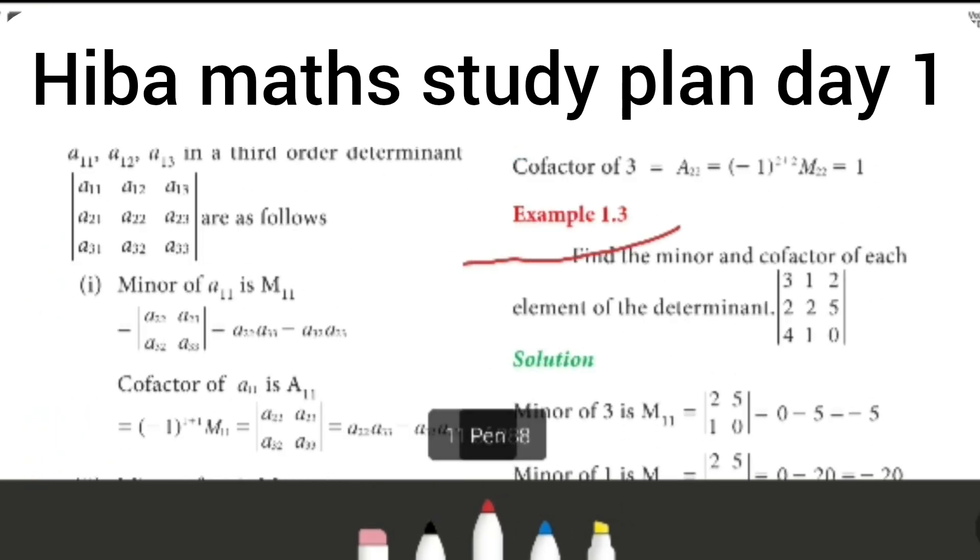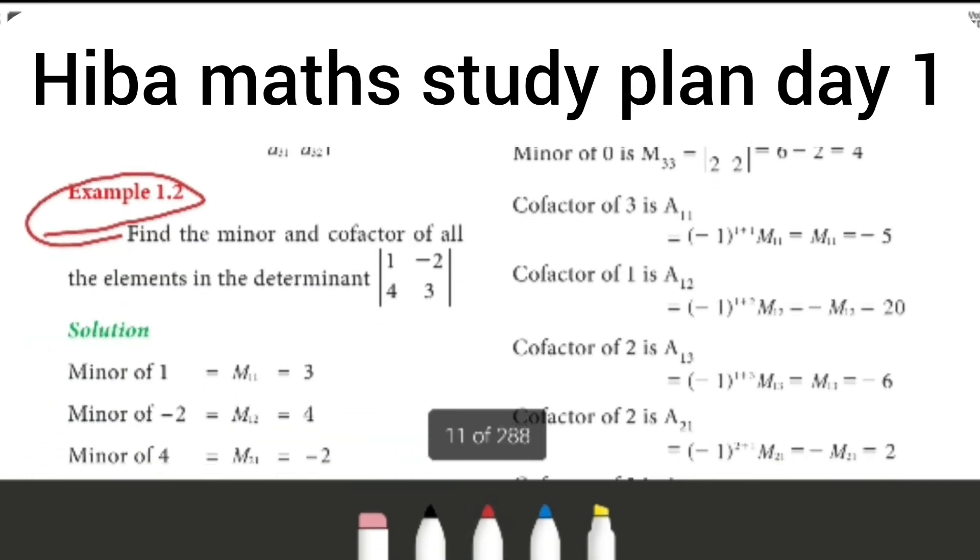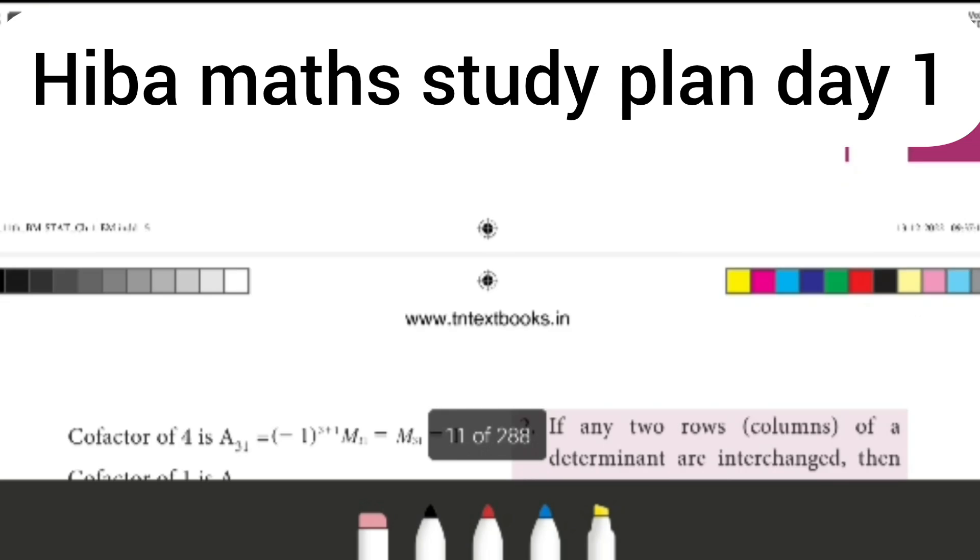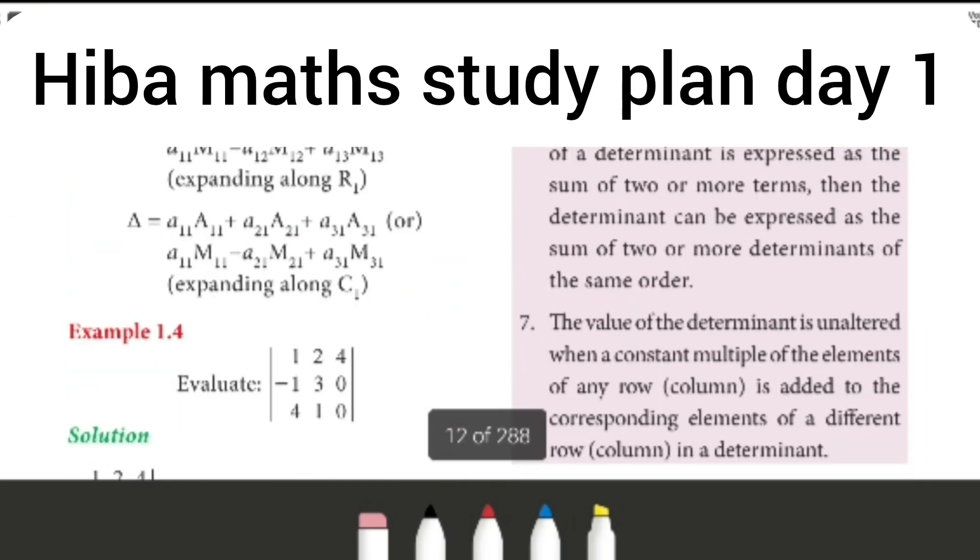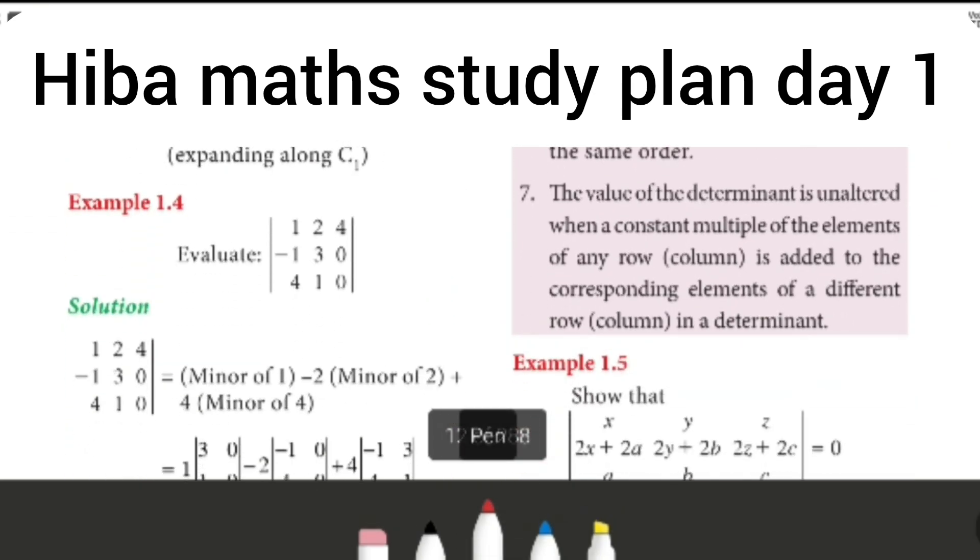Example 1.3: Find the minor and cofactor. Same - this is 2 by 2 matrix and this is 3 by 3 matrix. If you can do a type learning or model, you can do XY sums.